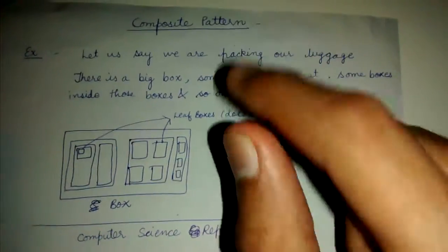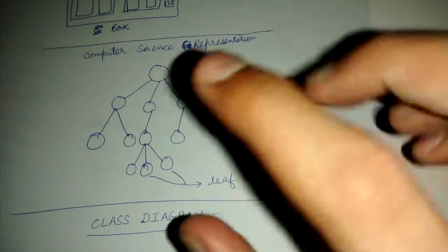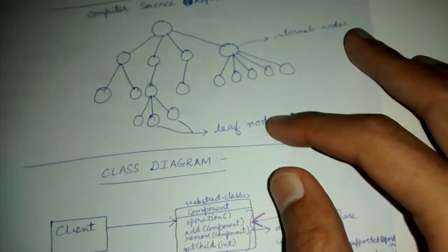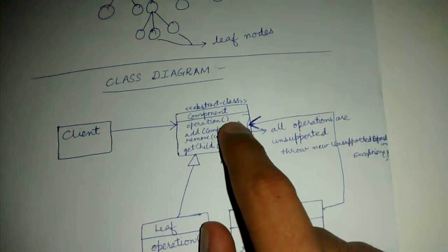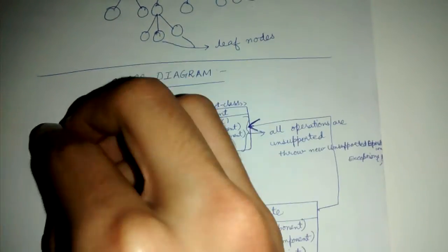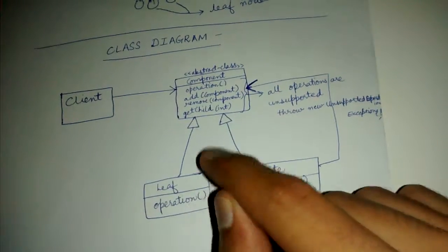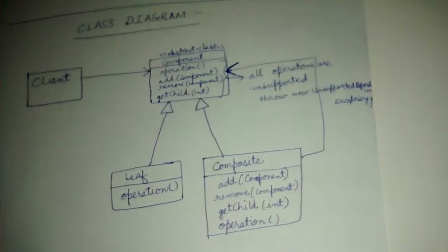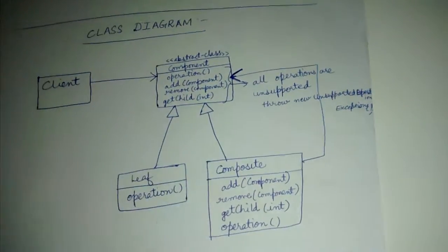The basics of the composite design pattern: we want to express leaf nodes and internal nodes in a uniform manner — we don't want the user to know the difference between them. The client is offered functionality in the form of a component interface or abstract class, which is the uniform interface provided to the client. The client does not know whether the implementor is a leaf or a composite.